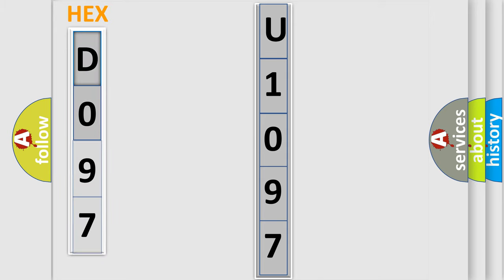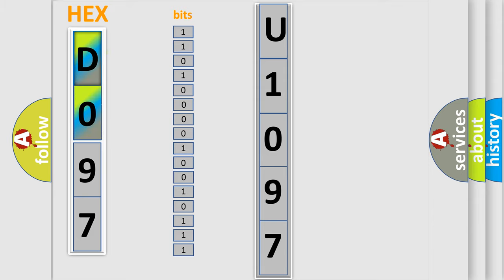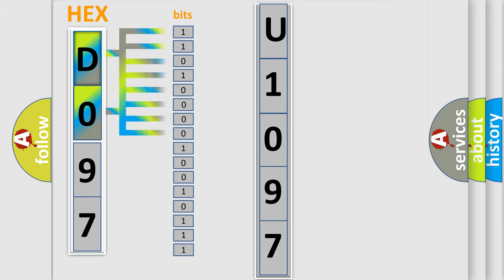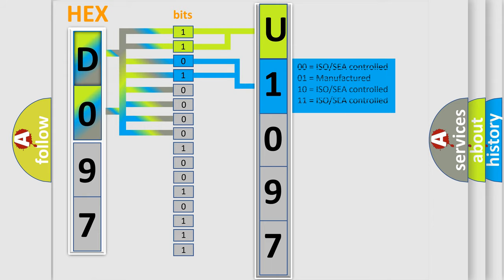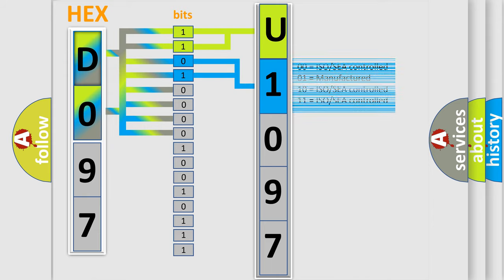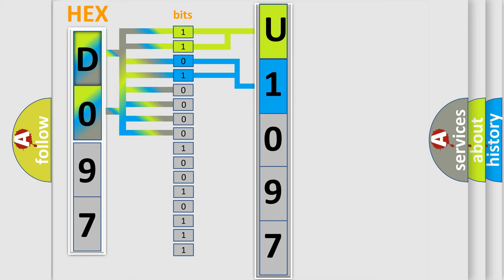The error code is split into two bytes consisting of 16 bits. One bit is the basic unit that each computer works with. The bit has two logical states: zero, low level, and one, high level. By combining the first two bits, the basic character of the error code is expressed. The next two bits determine the second character. The last bits of the first byte define the third character of the code.